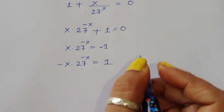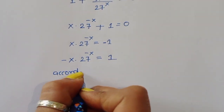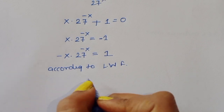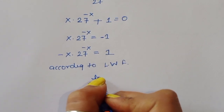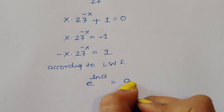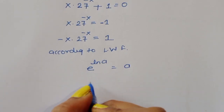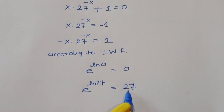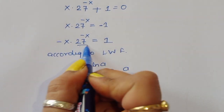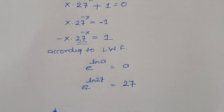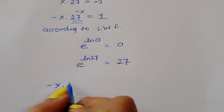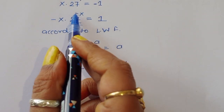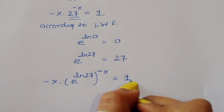According to the Lambert W function, we use the formula e power ln(a) equals a. So we can write e power ln(27) equals 27. In place of 27, we write e power ln(27), giving: minus x times e power ln(27) times minus x, times minus x equals 1.